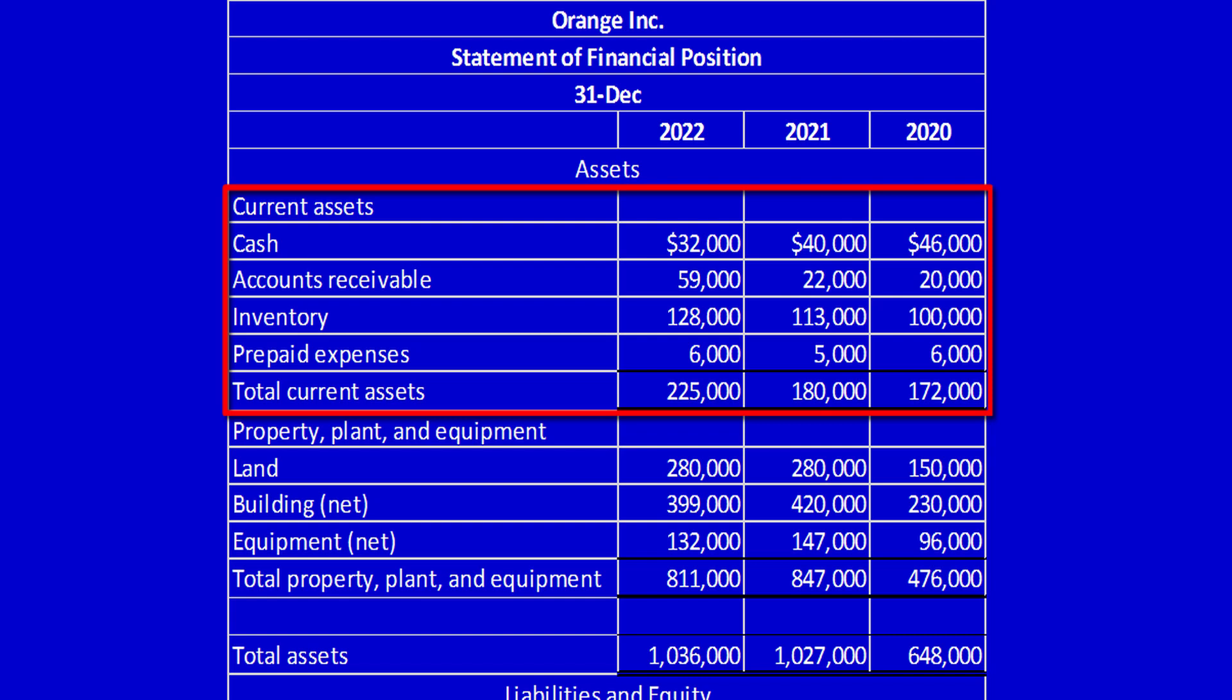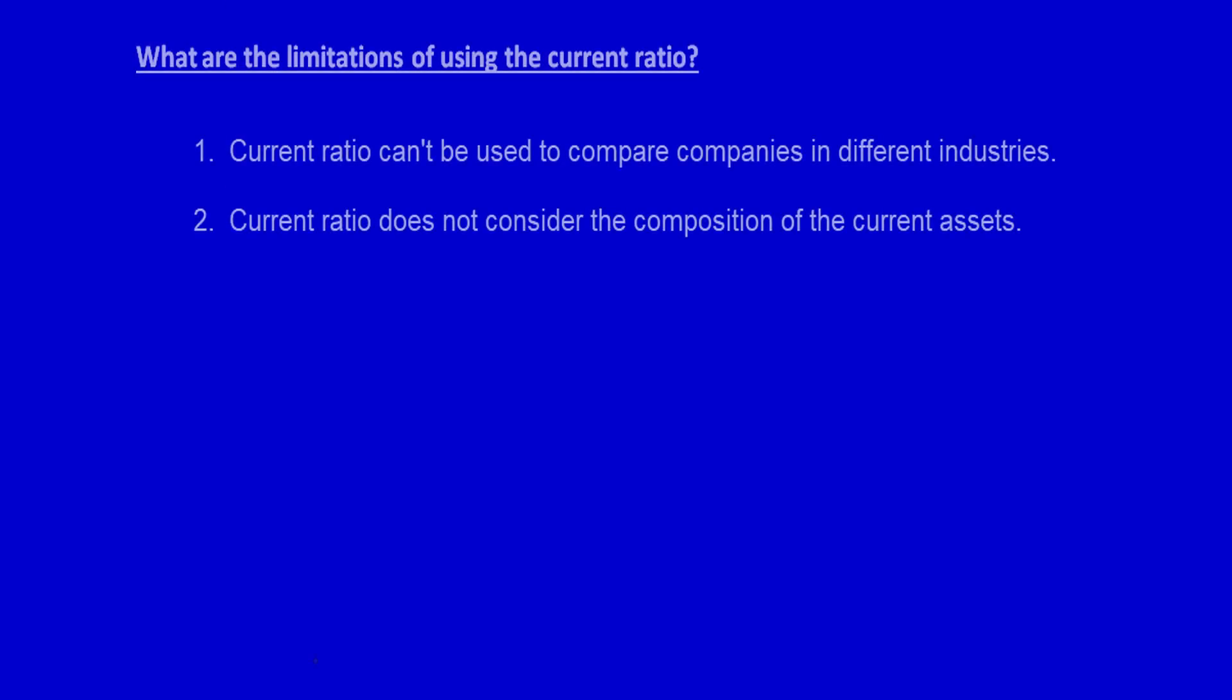As you can see, the current ratio doesn't take into account the composition of the current assets and therefore it has to be read with care. So remember, there are two limitations to the current ratio: it can't be compared between companies from different industries and it does not consider the composition of the current assets.